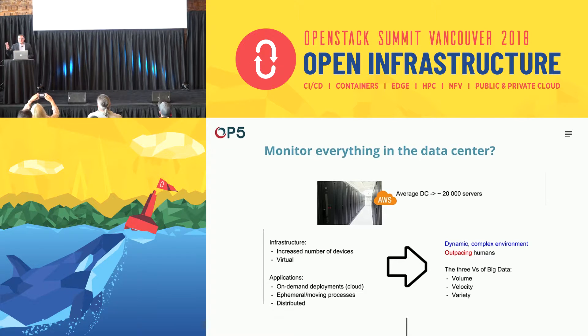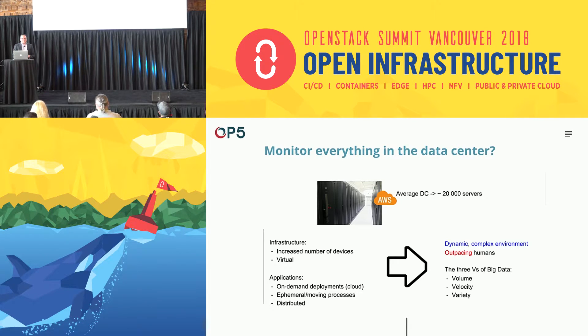That's really the crux of the conversation today: humans can't keep up, therefore we have to have automated systems in place. The three big V's I want to talk about today are the volume, velocity, and variety of data. Those three things together make it necessary for us to have some type of automated system to monitor our OpenStack deployments.